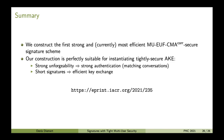To sum everything up: we construct the first strong and currently most efficient multi-user secure signature scheme with adaptive corruptions that is tightly secure. Our construction is therefore a perfect candidate for instantiating tightly secure authenticated key exchange, because we have strong unforgeability — giving a strong authentication notion in the sense of matching conversations — and we have short signatures, giving an overall efficient key exchange. Thank you very much for watching, and if you want to know more, please consider reading our paper; the link is on the slide.